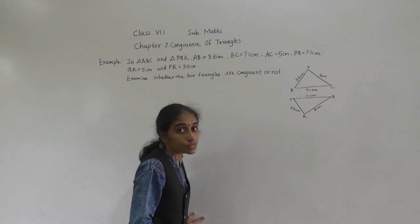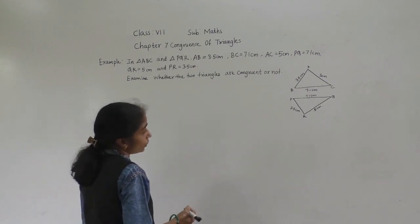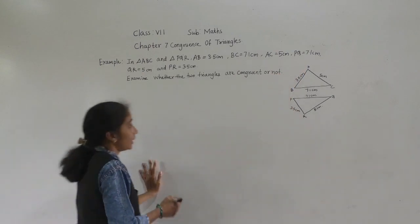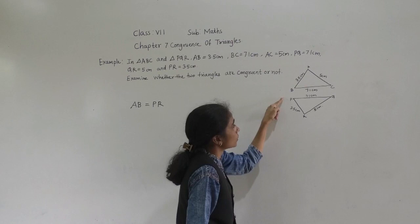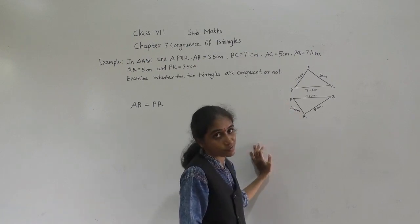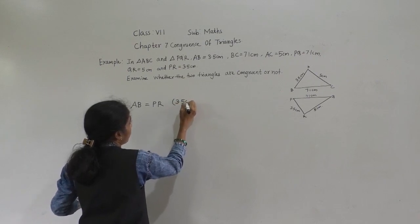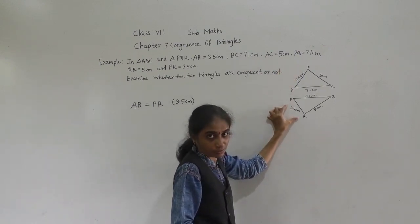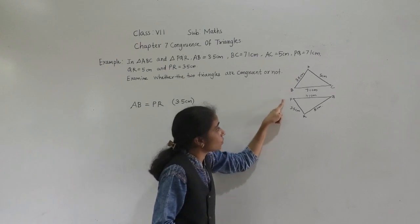We have to examine whether both the triangles are congruent or not. If you observe, AB is equal to PR. Why? Because if you see the measurement of AB and PR, both are 3.5 cm. So AB is equal to PR because both have the same measurement — both are 3.5 cm.